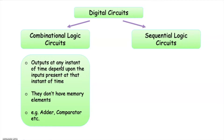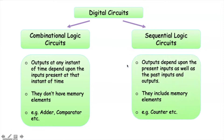For example, in an adder circuit, the output at any instant of time depends upon the input data present at that instant of time only. Whereas in sequential circuits, the outputs depend upon the present inputs as well as the past inputs and outputs. Sequential circuits have memory elements — for example, in a counter the output at any instant depends on the previous output of the circuit.